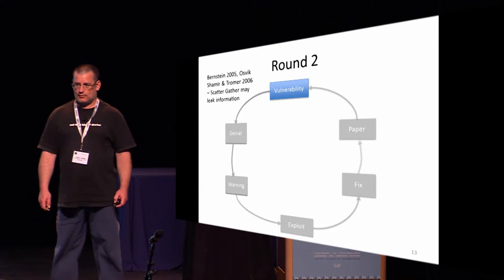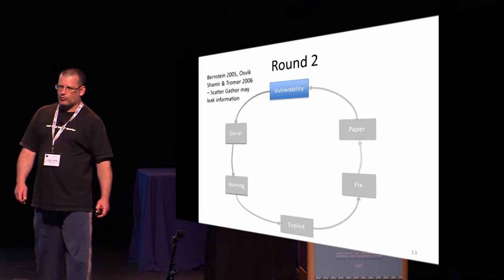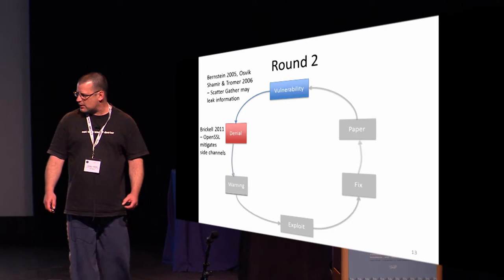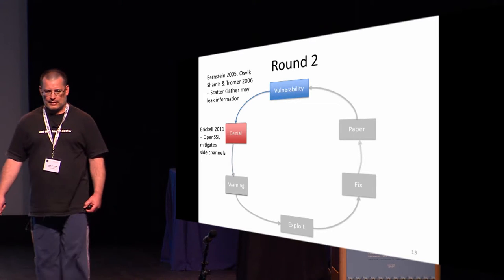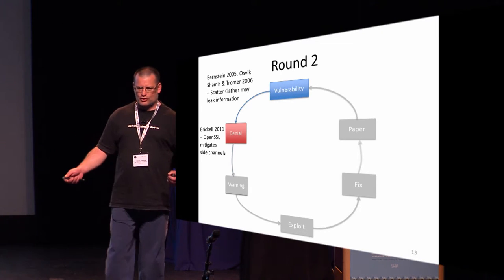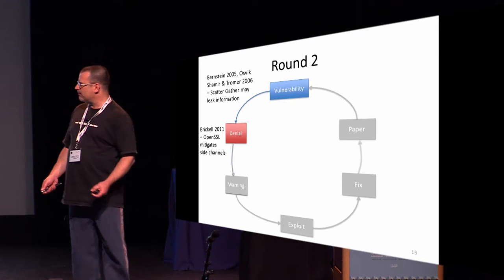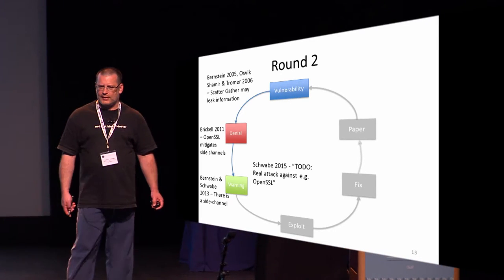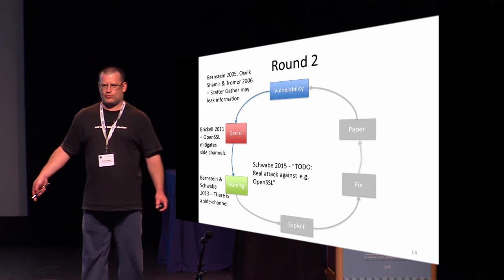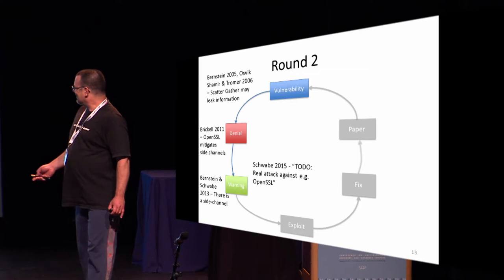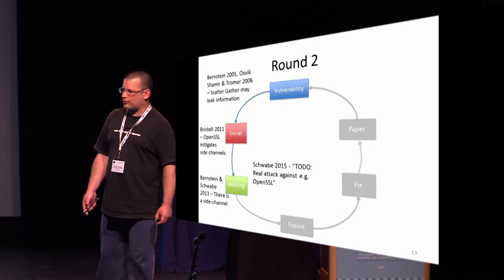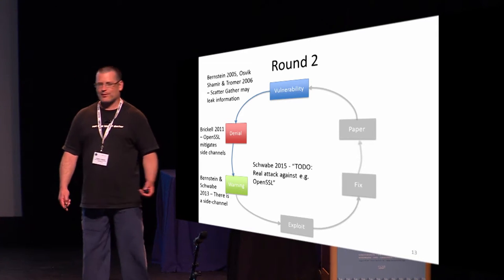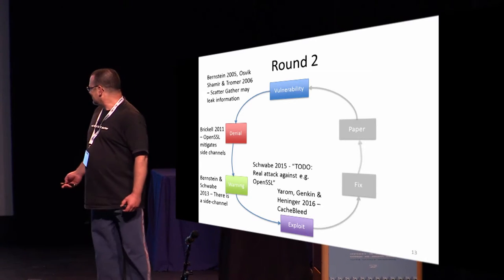That's the beginning of the second cycle. In 2011, Ernie Brickell gave the ramp session at CHES, saying that OpenSSL mitigates the side channels because it accesses every cache line in memory, so there is no secret-dependent access at a resolution lower than a cache line. In 2013, Bernstein and Schwabe demonstrated that there are timing variations. In 2015, Peter Schwabe asked the world to provide a real attack — and if Peter Schwabe asks, we do. So this is our work.